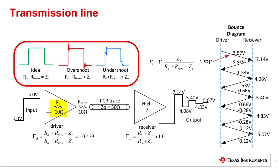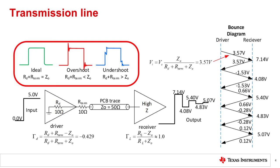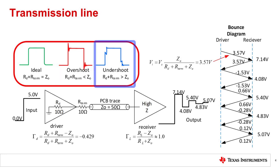The driver will have an internal impedance, RD, and an external termination resistance, R-term. The external termination resistance is used to match the PCB board trace impedance. If RD plus R-term matches the PCB board trace impedance, the signal delivered to the load will not have overshoot or undershoot. If RD plus R-term is less than the trace impedance, there will be overshoot, and if it is greater than the trace impedance, there will be undershoot.